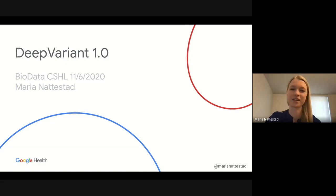Hi, I'm Maria Nattestad. I work on the genomics team in Google Health, and this is a talk called DeepVariant 1.0 that I originally gave as a presentation at the Biological Data Science meeting at Cold Spring Harbor Lab in November of 2020. I wanted to record it now so that we can put it out on the internet and hopefully other people, users of DeepVariant, other scientists, can get access to it and use it to learn more about DeepVariant.